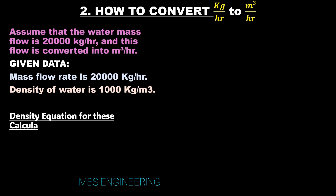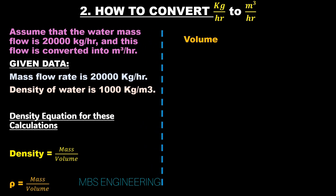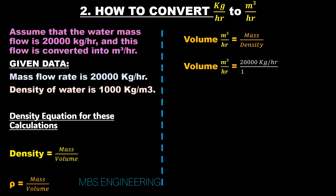Density equation for these calculations: density is equals to mass divided by volume, or rho equals mass divided by volume. Therefore, volume in meter cube per hour is equals to mass divided by density. Volume equals 20,000 divided by 1,000, based on meter cube per kilogram.